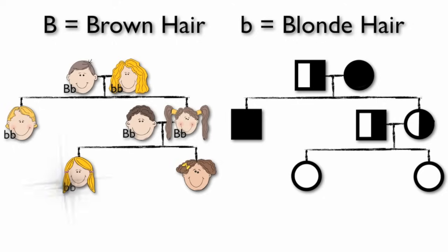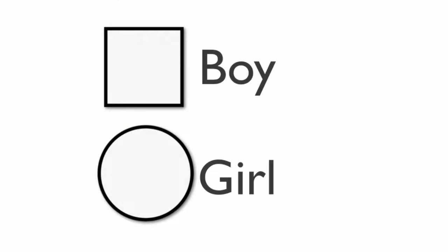Their firstborn had blonde hair, so to represent this in the pedigree chart we will shade her circle in completely. And her sister inherited two dominant genes for hair color. We will leave her shape unshaded. If we take a look at the pedigree, we can review what we learned.